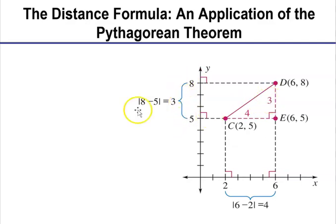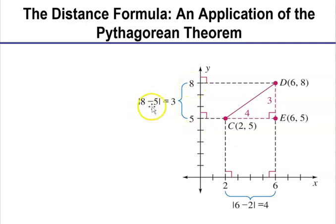Why did they put absolute value? Because it doesn't matter the order you subtract. If you decided to do 8 minus 5 versus 5 minus 8, we're talking about a distance. That's why they used the absolute value symbol here and down here. That's how we used the Pythagorean Theorem — it's exactly what I did, just a little more structured the way they wrote it.